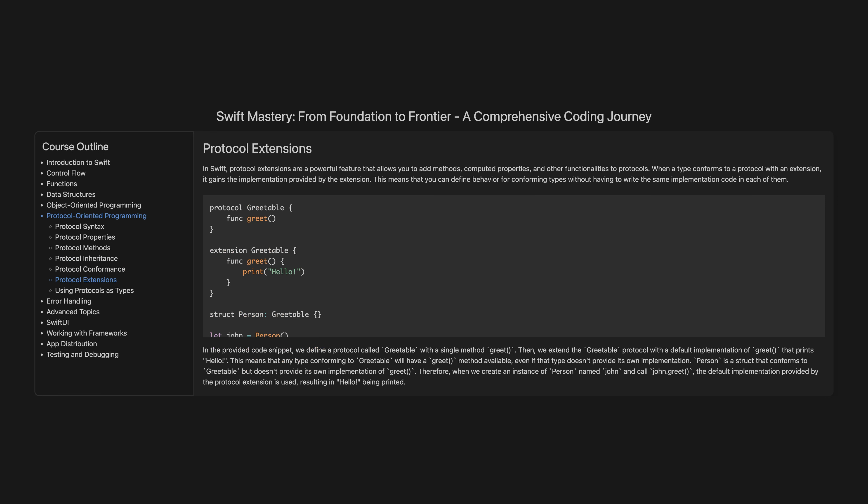Protocol extensions. In Swift, protocol extensions are a powerful feature that allows you to add methods, computed properties and other functionalities to protocols. When a type conforms to a protocol with an extension, it gains the implementation provided by the extension. This means you can define behaviour for conforming types without having to write the same implementation code in each of them. In the provided code snippet, we define a protocol called Greetable with a single method greet, then extend the Greetable protocol with a default implementation of greet that prints 'hello'. Person is a struct that conforms to Greetable but doesn't provide its own implementation of greet. Therefore, when we create an instance of Person named john and call john.greet, the default implementation provided by the protocol extension is used, resulting in 'hello' being printed.